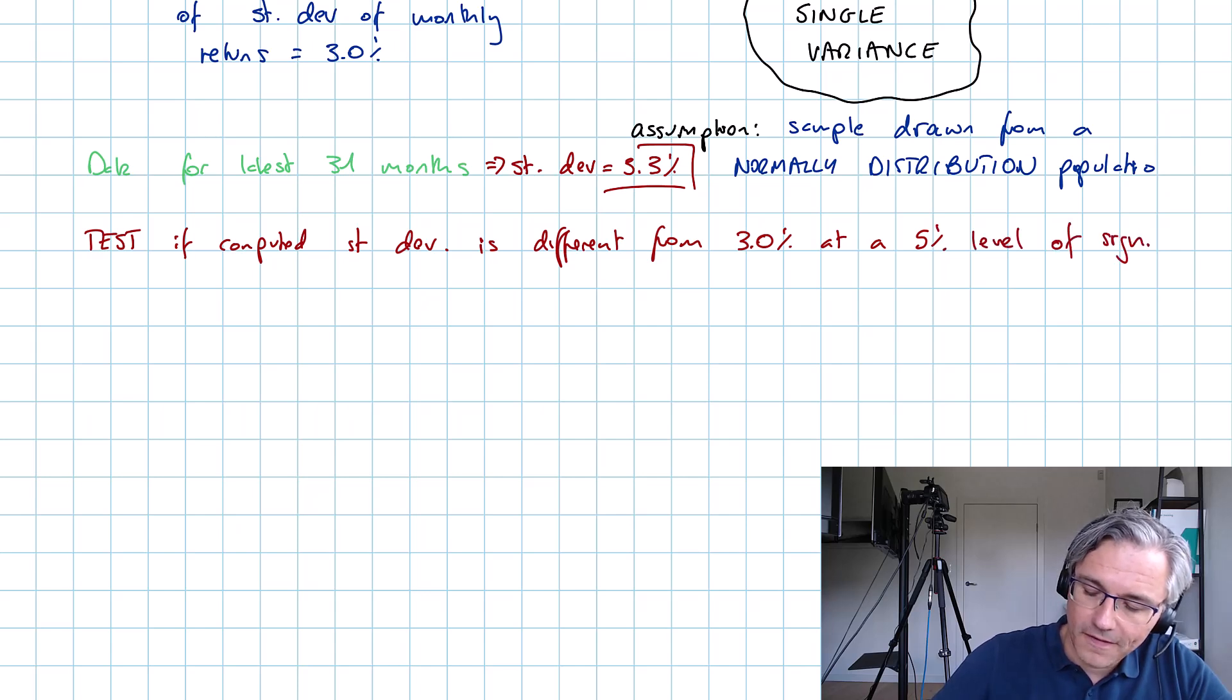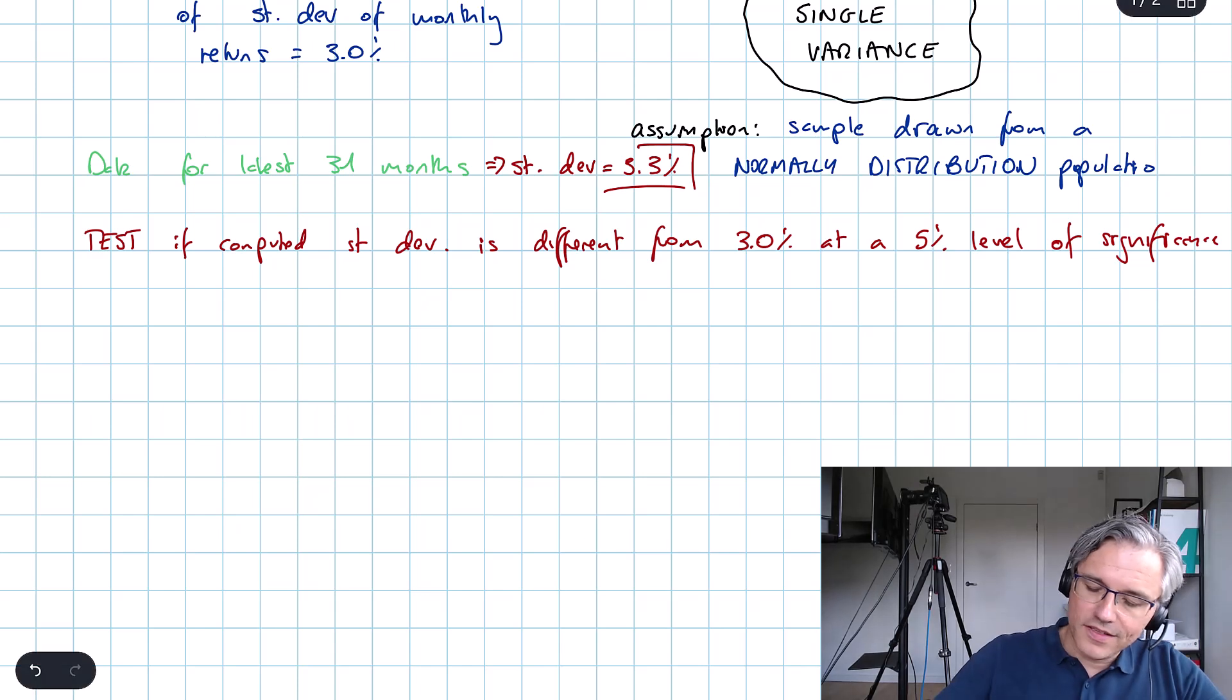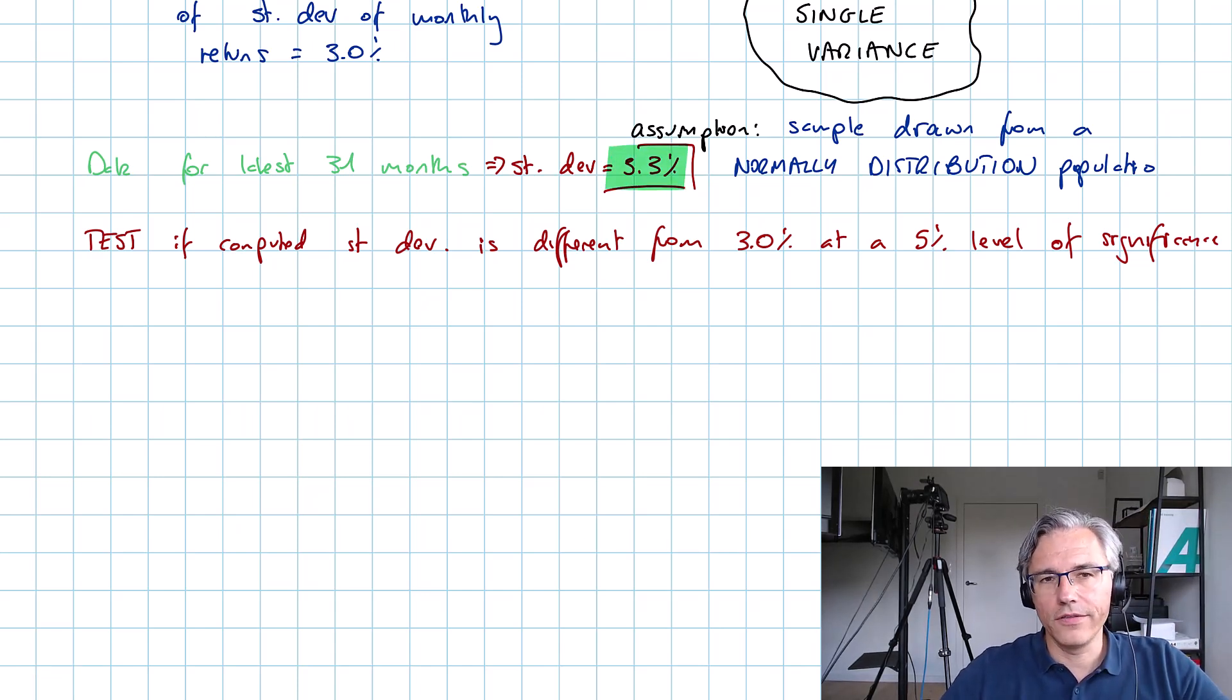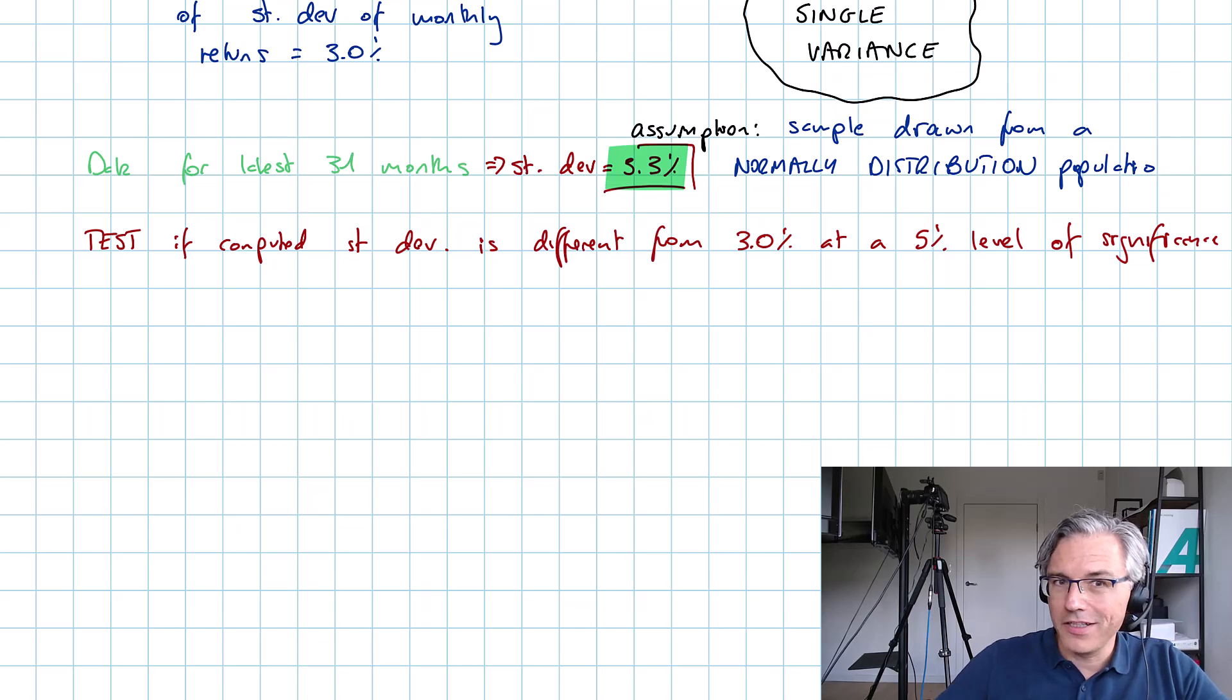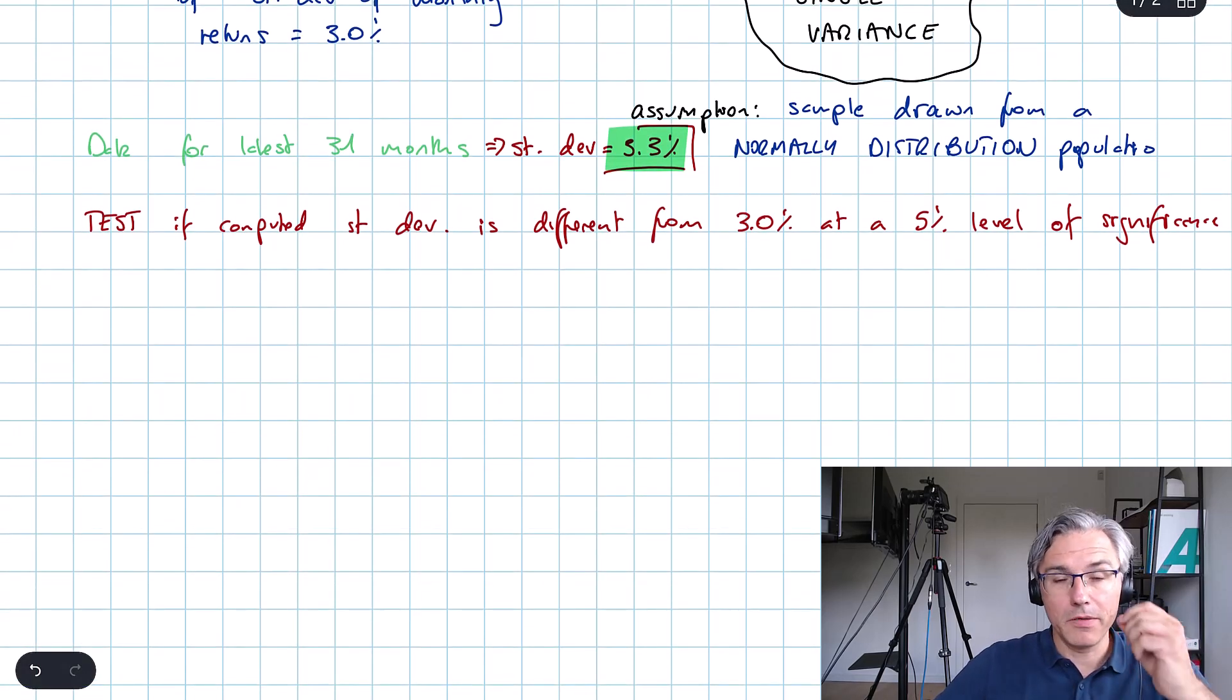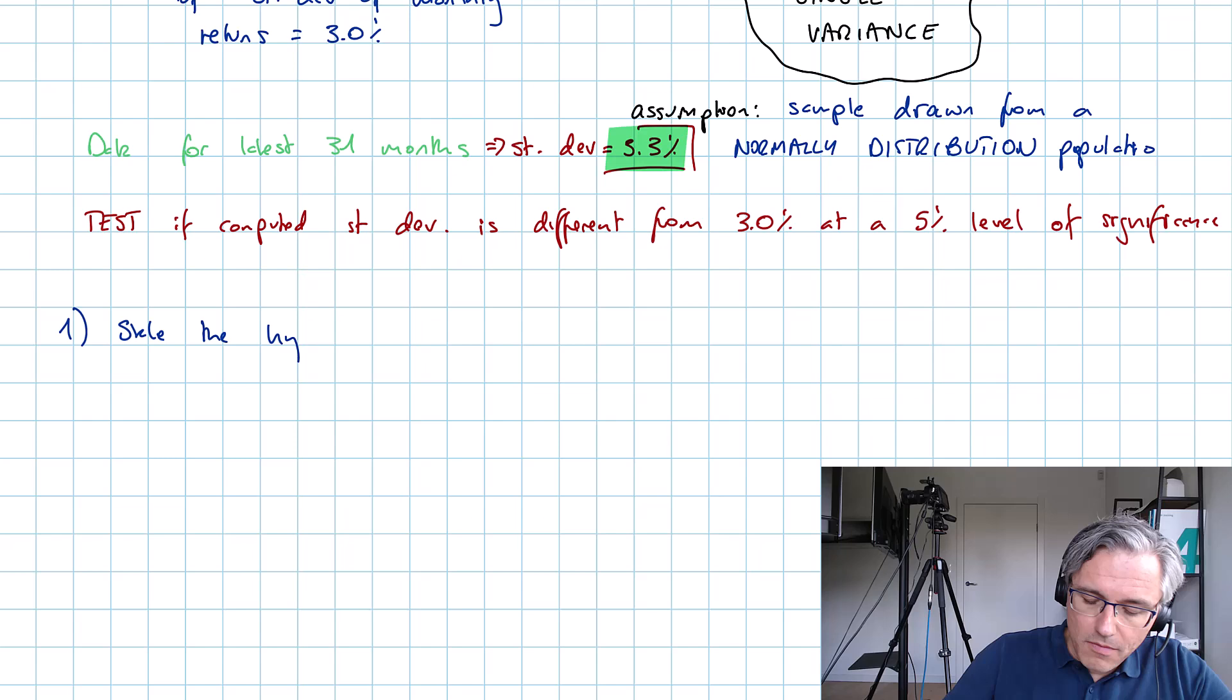I want us to perform a test, go through all the steps necessary to perform a test to see if the computed standard deviation, that's the 3.3 percent, is different, significantly different from that objective of 3 percent at a 5 percent level of significance.